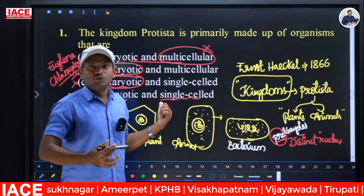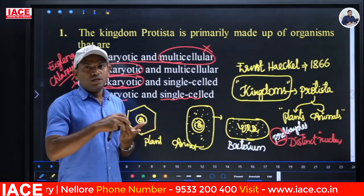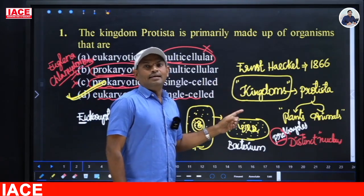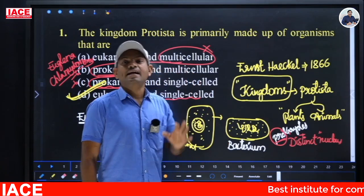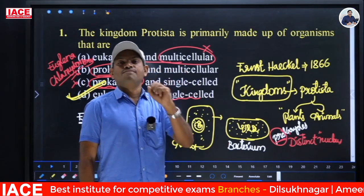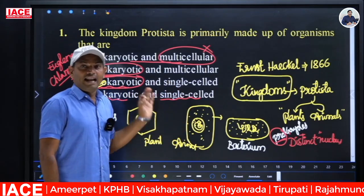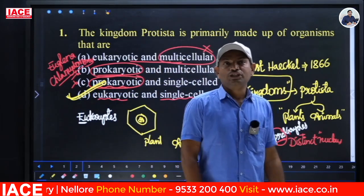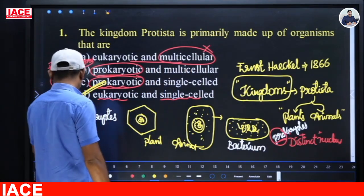According to Haeckel, there were three kingdoms: Plantae, Animalia, and Protista. This three-kingdom classification proposed by Ernest Haeckel in 1866 was extended in 1969 into the five-kingdom classification accepted in India, proposed by R.H. Whittaker. The answer for the first question is option D.